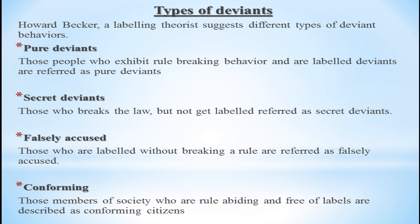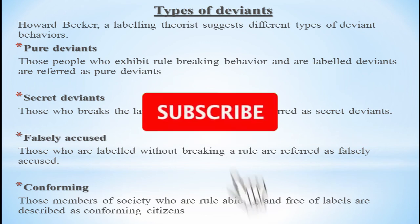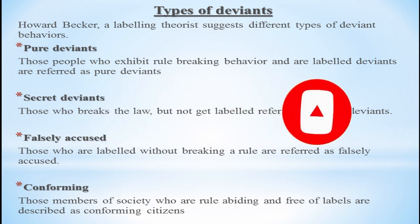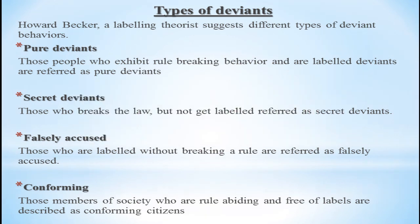Confirming citizens are those who are rule-abiding citizens, on whom no label is applied and who are free from labels — they are called confirming citizens, not deviants. I hope this short video lecture has been understood. If you still have any questions or confusion, you can ask me in the comment section below. If you haven't subscribed to my channel yet, please subscribe and press the bell icon. Thank you very much, stay focused for my upcoming lectures — God bless you.